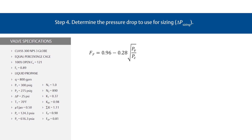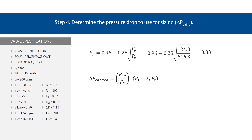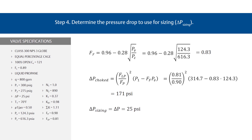First, find the liquid critical pressure ratio factor using the F sub F equation. Plug in your variables for a result of 0.83. The choked pressure drop, delta P sizing, is found using the standard delta P choked equation. Enter your variables for a result of 171 PSI. Since the actual pressure drop is lower than the choked pressure drop, we know that delta P sizing equals delta P, which equals 25 PSI.